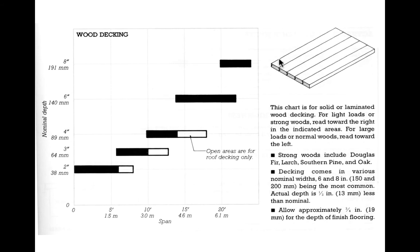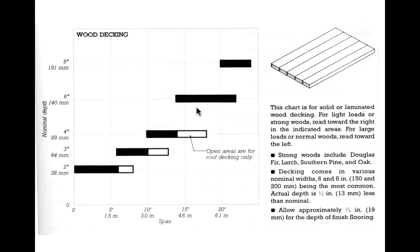Wood decking typically has a key detail so that when we push down on one piece of deck, it pulls the other one down with it. Even though we refer to these as one-way systems, we get a little bit of two-way behavior through resistance to deflection. Solid pieces of wood tend not to span very far — we try to keep wood deck usually down in the two-to-four-inch range.